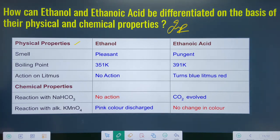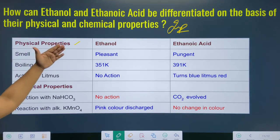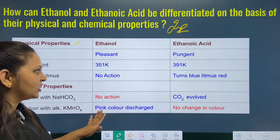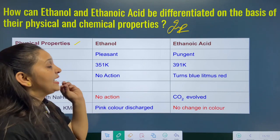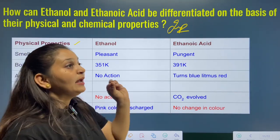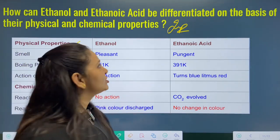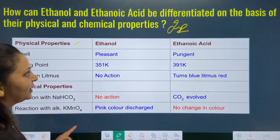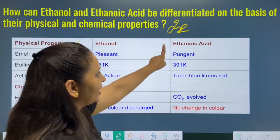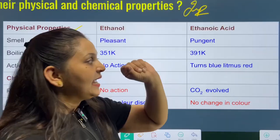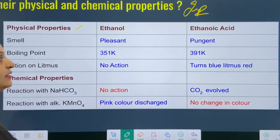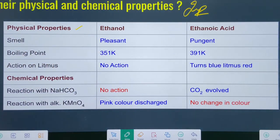Action on litmus: ethanol has no action on litmus, because ethanol is not acidic. However, ethanoic acid turns blue litmus red, indicating its acidic nature.